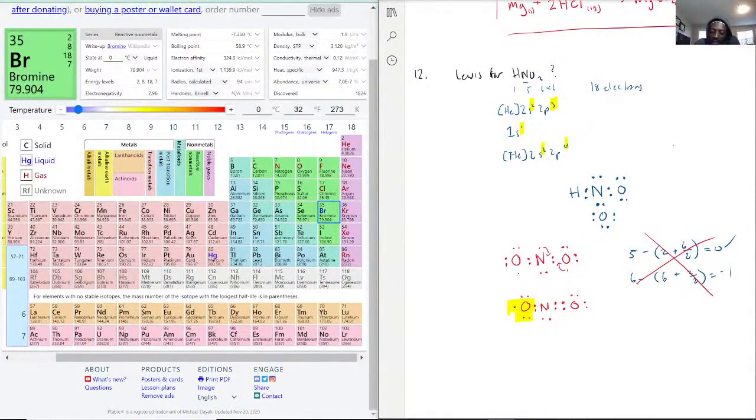If we did the math real quick, we have nitrogen. It's still five minus—now there's two lone pairs so it'll be two, and then it has six in the bond.